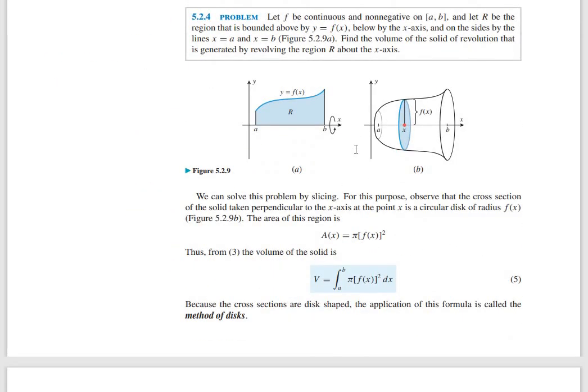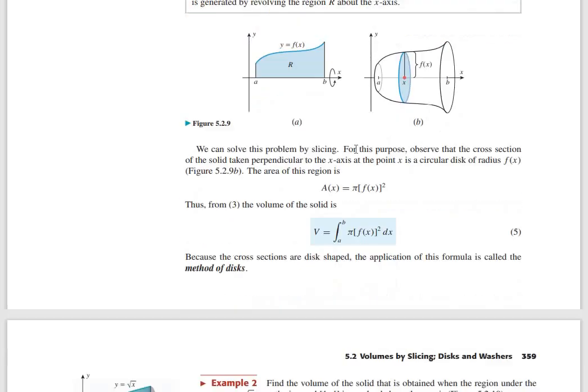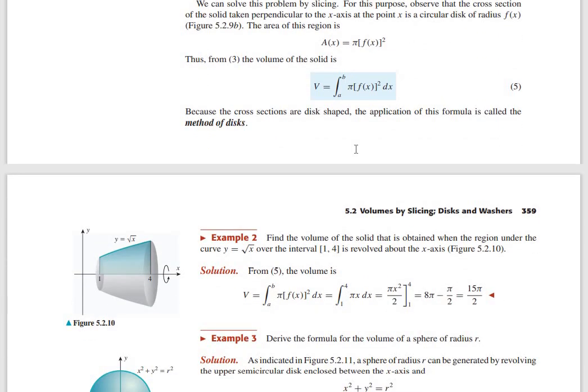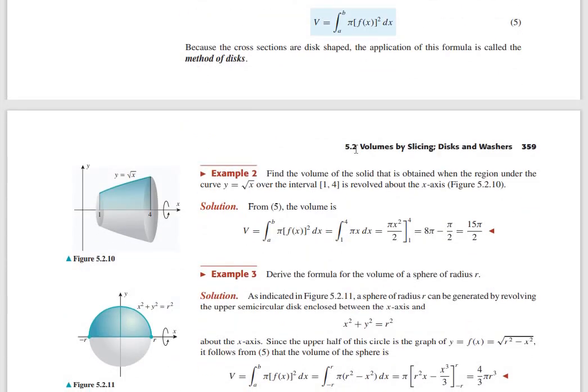We start with a curve or a line. A curve will revolve to generate a shape or a region. This is a curve; we will apply the disc, washer, or shell method to find the volume of the resulting solid.